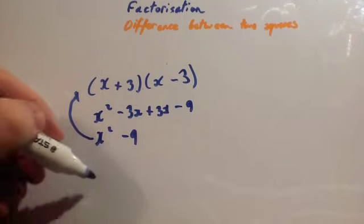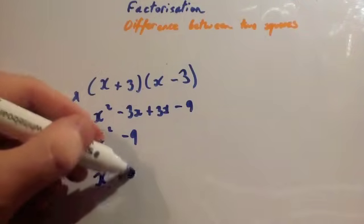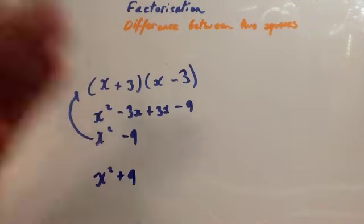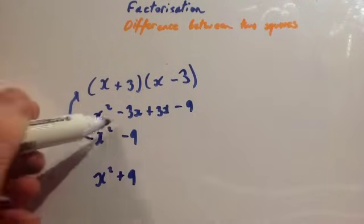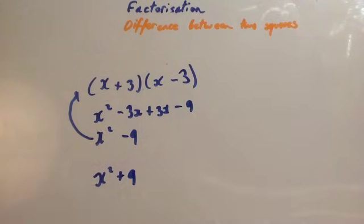If you had something like x² + 9, you can't factorize that in the same way. So what we're going to do is look at factorizing using difference between two squares.